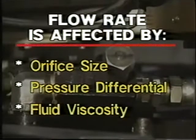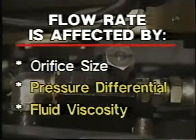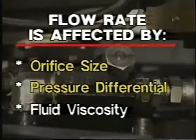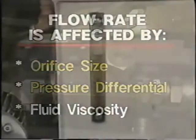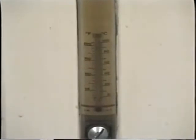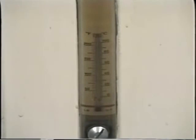So far, we've discussed two of the three main factors that affect flow: orifice size and the pressure differential across the orifice. The third is fluid viscosity. We learned in an earlier lesson that viscosity varies with changes in temperature. As fluid gets hotter, its viscosity decreases and more of it flows through the orifice. As fluid gets cooler, its viscosity increases and less of it flows through the orifice.